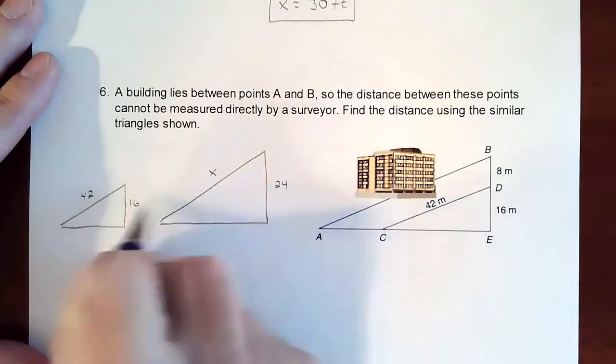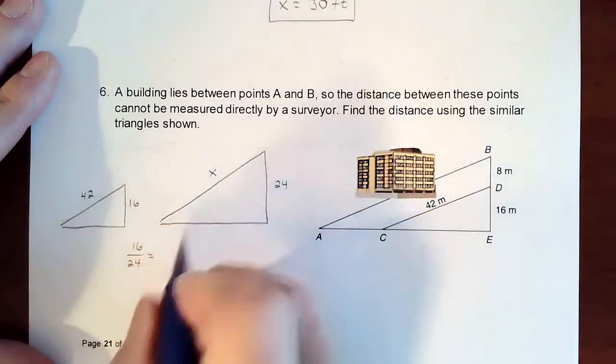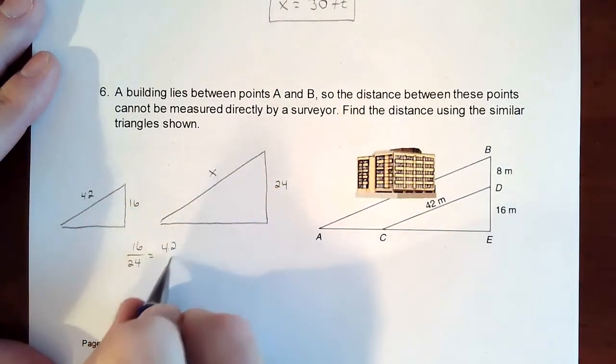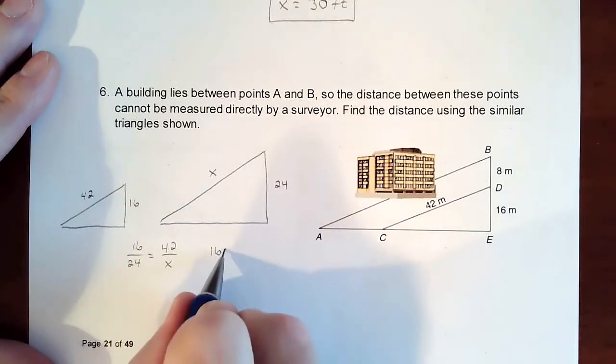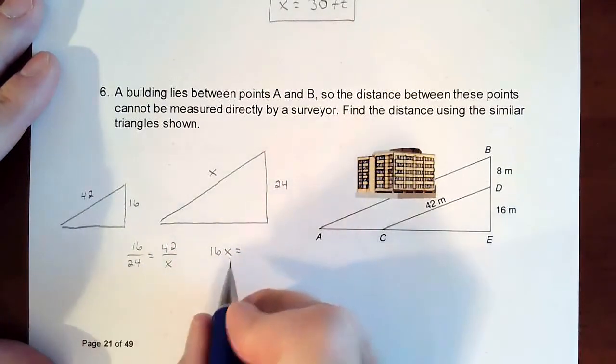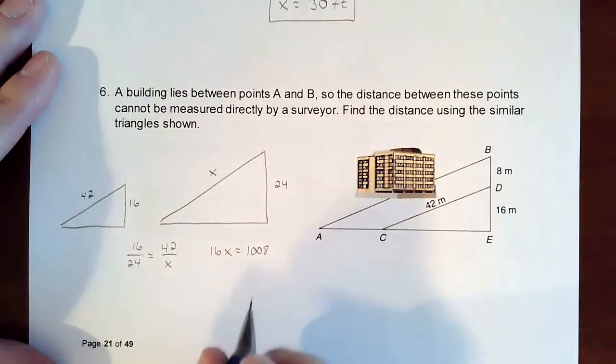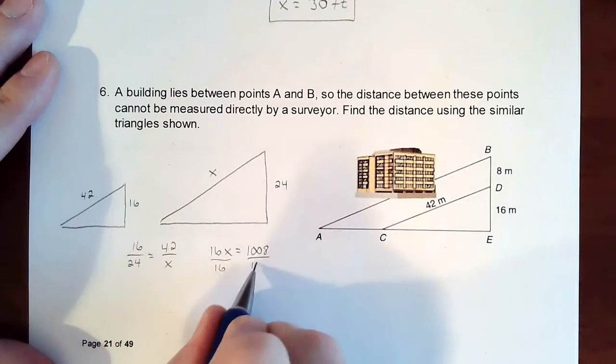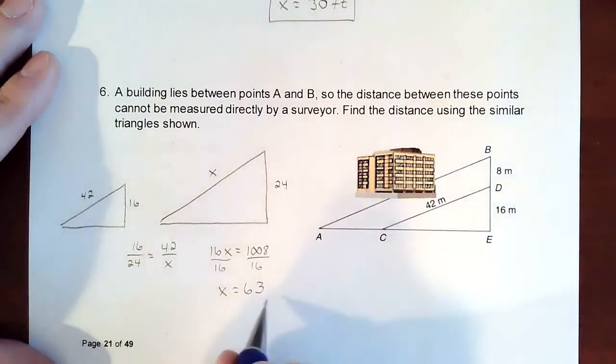If we take the small to big, we'd have 16 related to 24 would equal 42 compared to X. And then we cross multiply. So 16 times X would be 16X. And if we multiply 42 times 24, that would get us 1008. We divide by 16, X is going to equal 63. So that distance should be 63 meters.